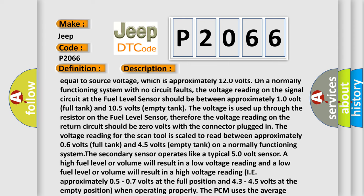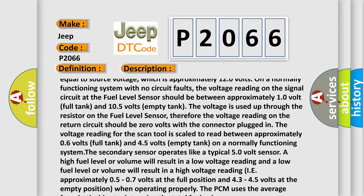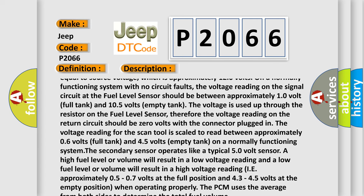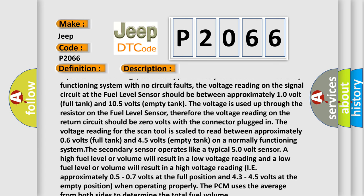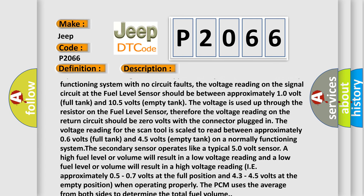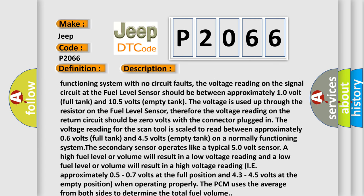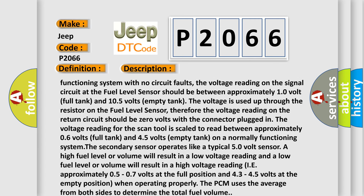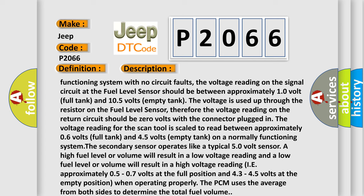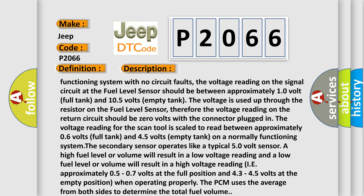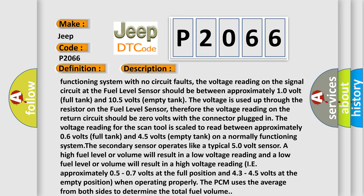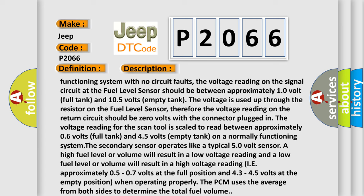The secondary sensor operates like a typical 5.0 volt sensor. Either a high fuel level or volume will result in a low voltage reading and a low fuel level or volume will result in a high voltage reading, approximately 0.5 to 0.7 volts at the full position and 4.3 to 4.5 volts at the empty position. When operating properly the PCM uses the average from both sides to determine the total fuel volume.